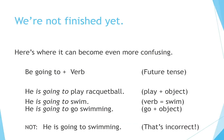Here's where it can become even more confusing: 'be going to' plus verb for the future tense. 'He is going to play racquetball' — play is the verb, racquetball is the object. 'He is going to swim' — the verb is swim. 'He is going to go swimming' — the verb is go and the object is swimming. Not 'he is going to swimming' — that's incorrect.